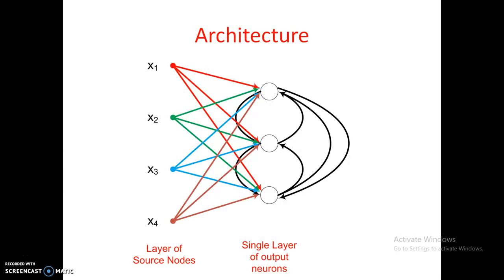Looking at the architecture: there are source nodes x1, x2, x3, and x4, and three neurons are shown in the output layer. Even though there are three output neurons, only one neuron has to fire at any time. There are two key questions to discuss: first, how does a neuron win the competition — what is the criteria; and second, after winning, how are the weights updated.